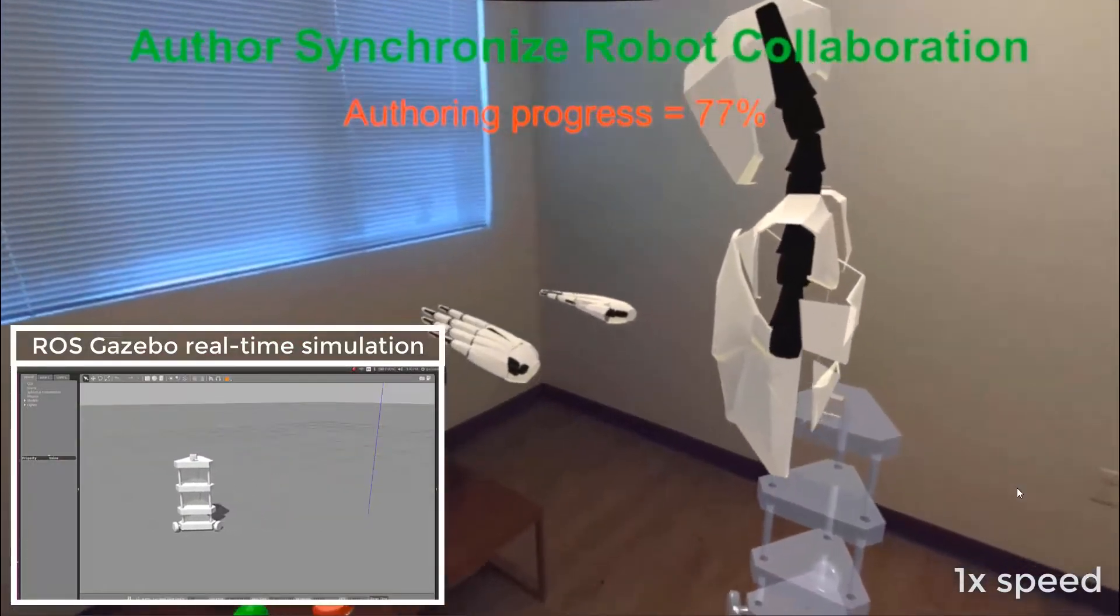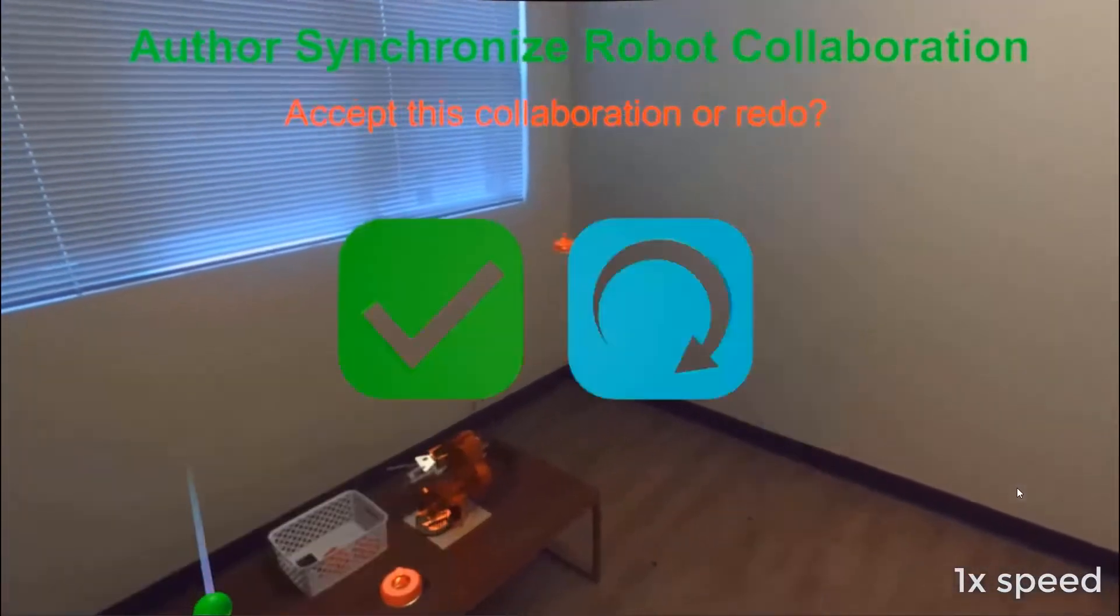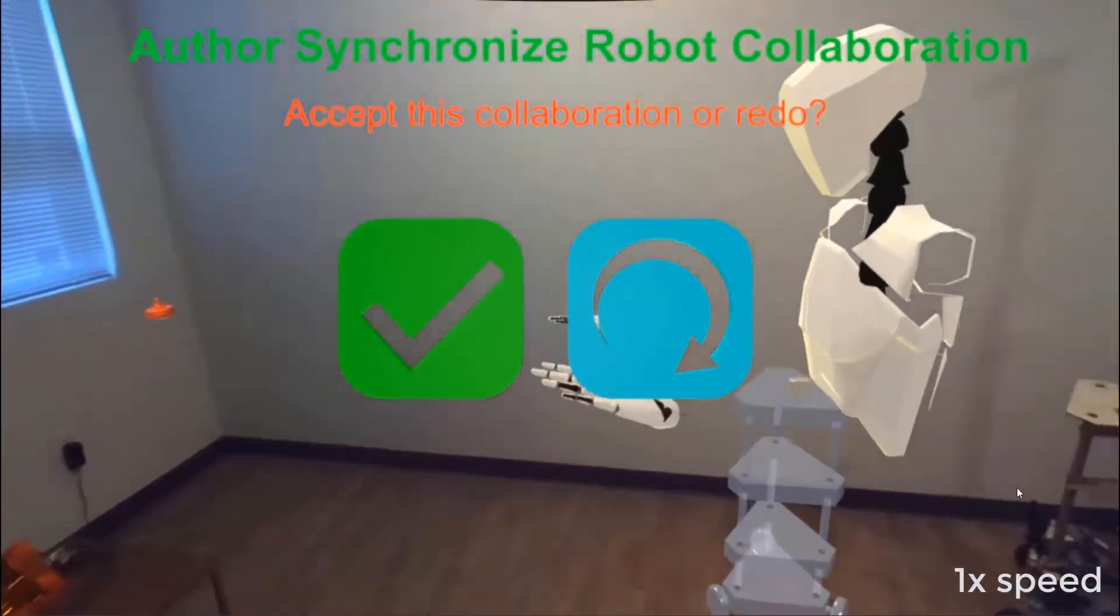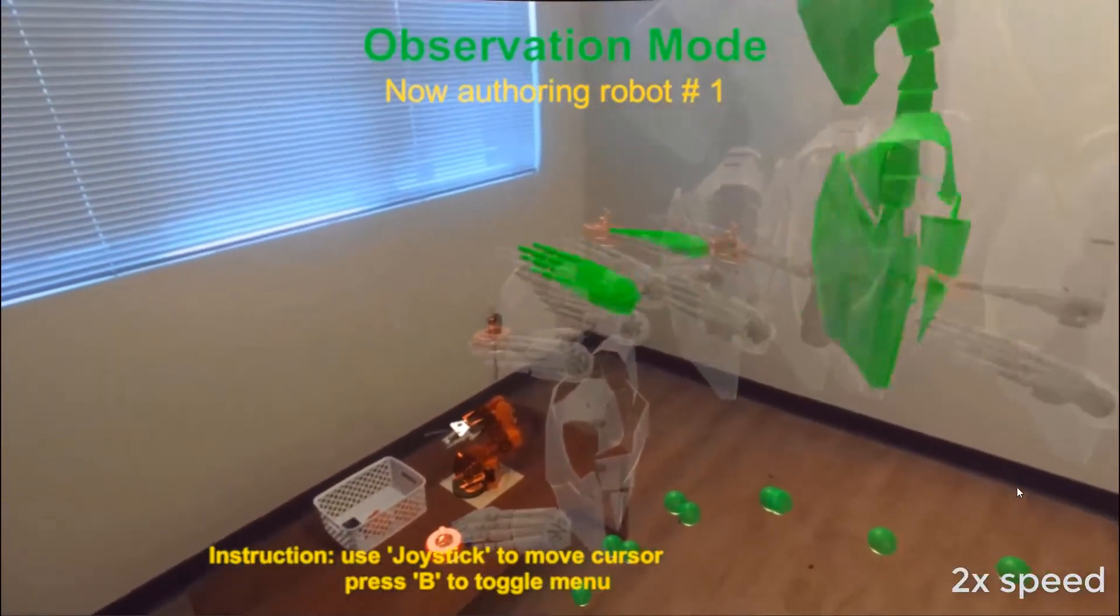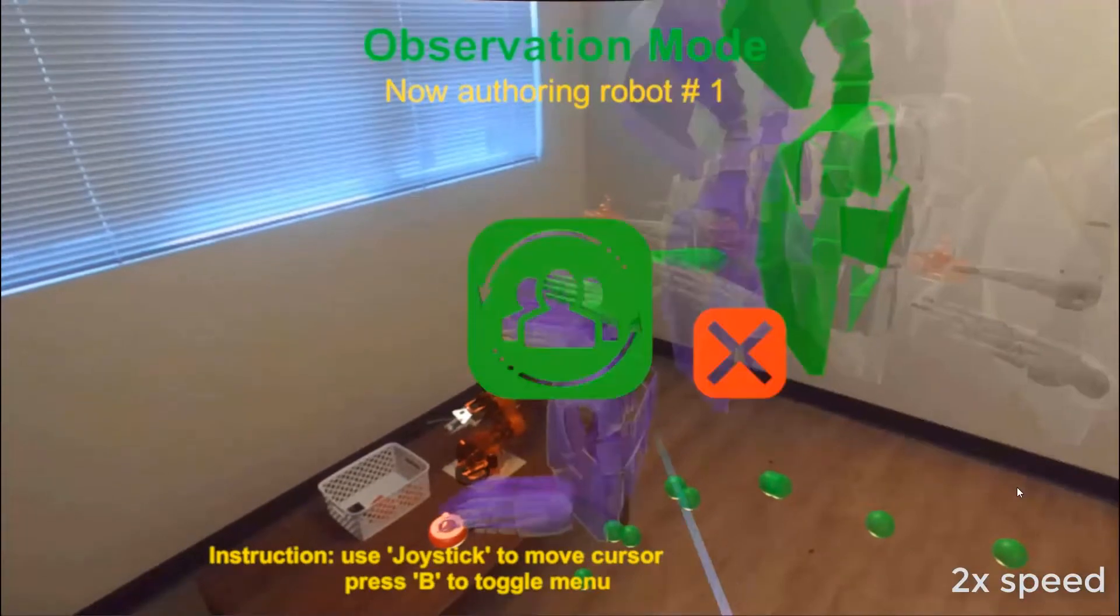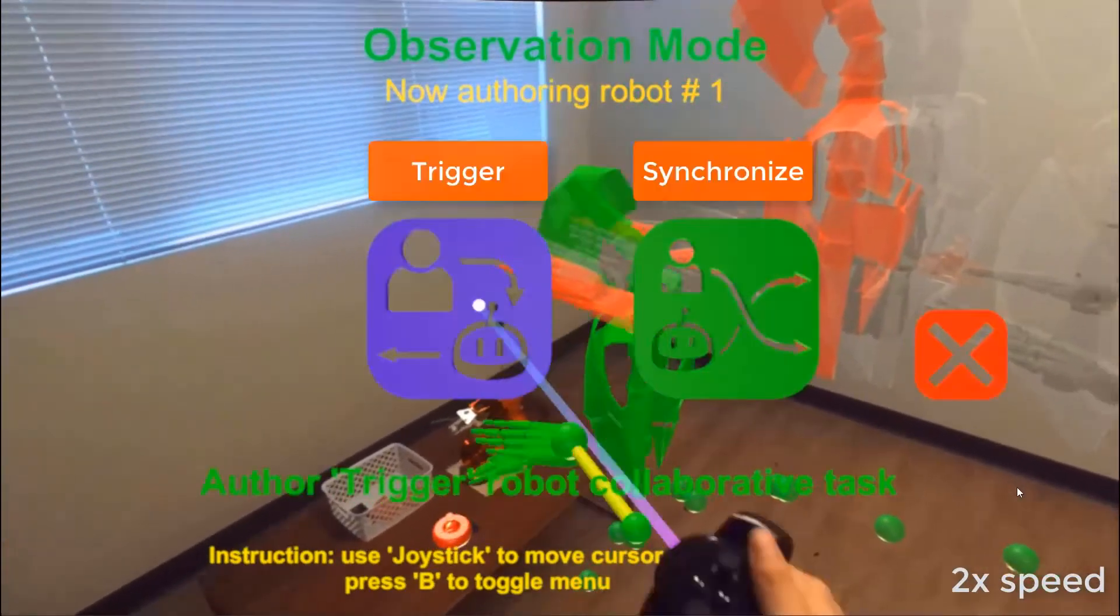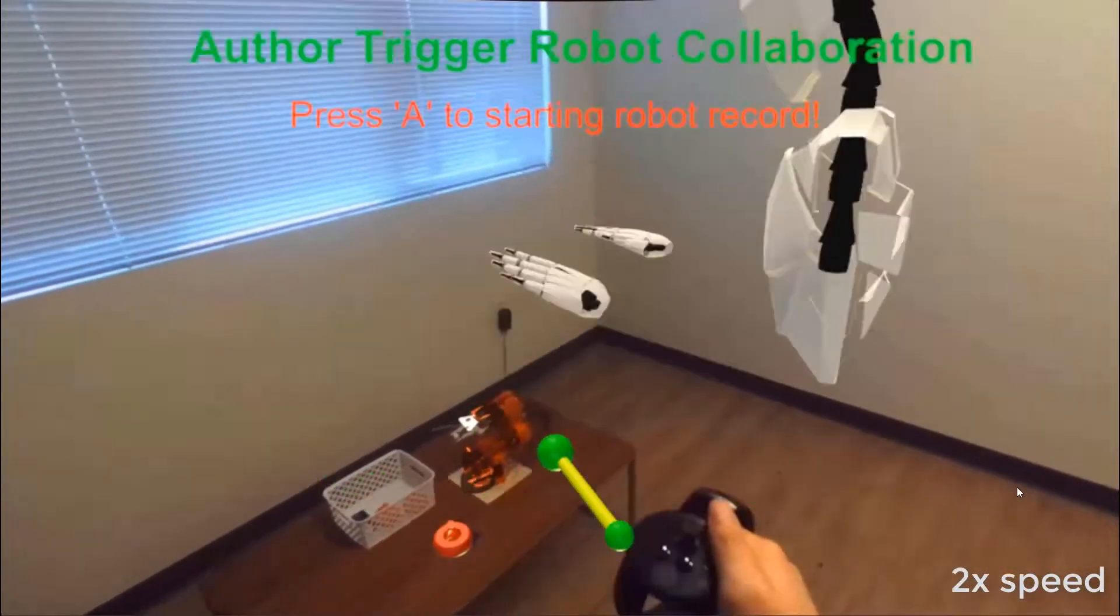With the human ghost as time-space reference, user can author robot action with a ROS-powered virtual avatar. User now switches to the ARMBOT and authors a robot action that is triggered by the human motion group. A triggered robot action happens right after the human action in the group.